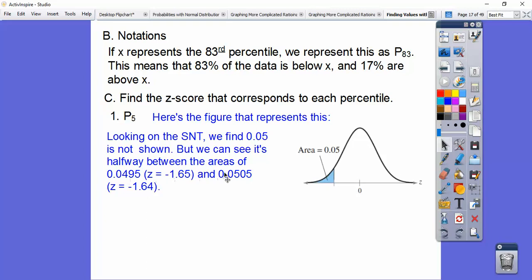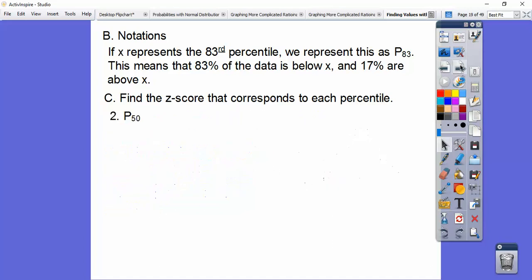So since it's right in the middle of these, then a number that's right in the middle of these is we average these guys. So add them up and divide by 2, and that'll get us negative 1.645 is our z-score that gets us P sub 5, which is the 5th percentile. So we just had to average those because it's right in the middle.